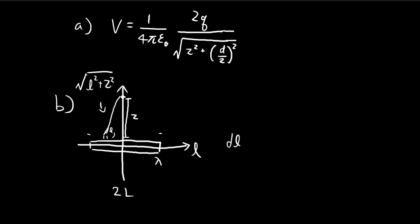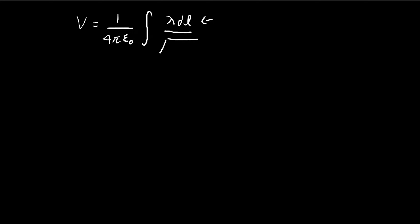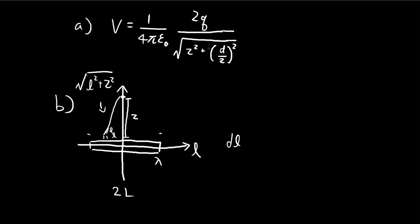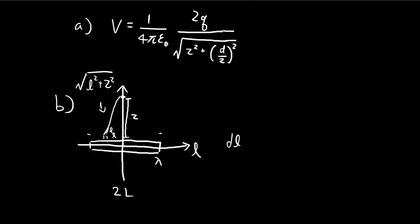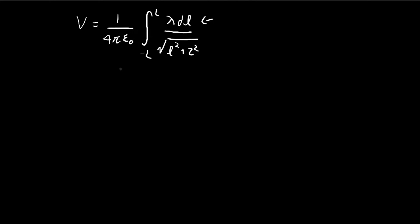I'm going to let this length here be L, so that's going to be the distance. Using that, the denominator is going to be L squared plus Z squared. Since we're doing the integral in terms of DL, it's going to go from negative big L to big L, because the total length is 2L.